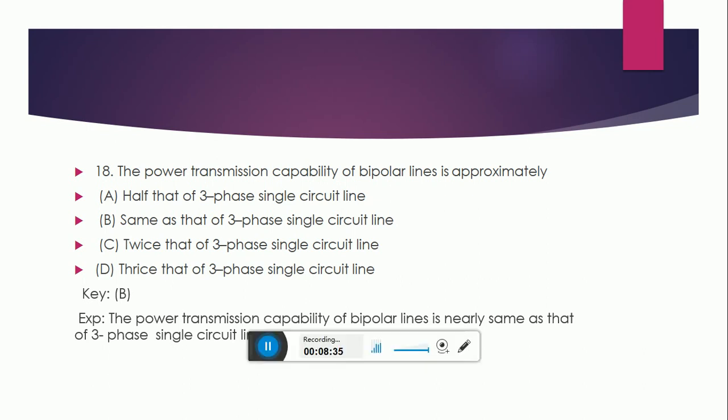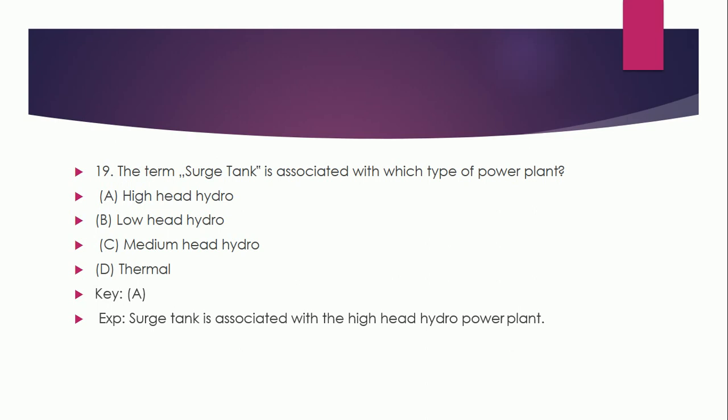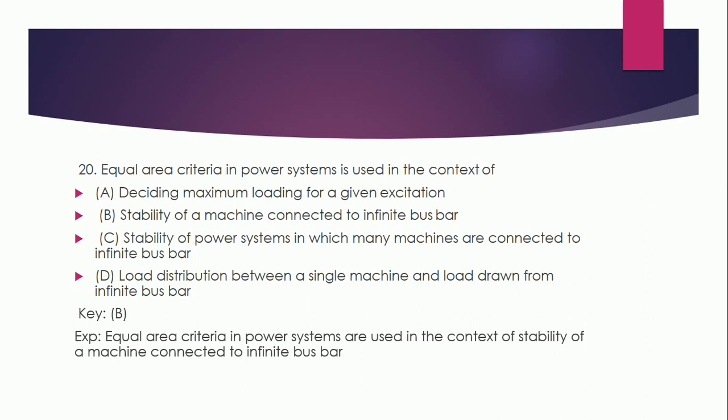Question 19: The term surge tank is associated with which type of power plant? High head hydro, low head hydro, medium head hydro, or thermal? The correct answer is A — high head hydro. The surge tank is associated with the high head hydro power plant. Question 20: Equal area criteria in a power system is used in the context of: A: deciding maximum loading for a given excitation, B: stability of a machine connected to infinite bus bar, C: stability of power system with many machines connected to infinite bus bar, D: load distribution between a single machine and load from infinite bus bar. Correct answer is B.